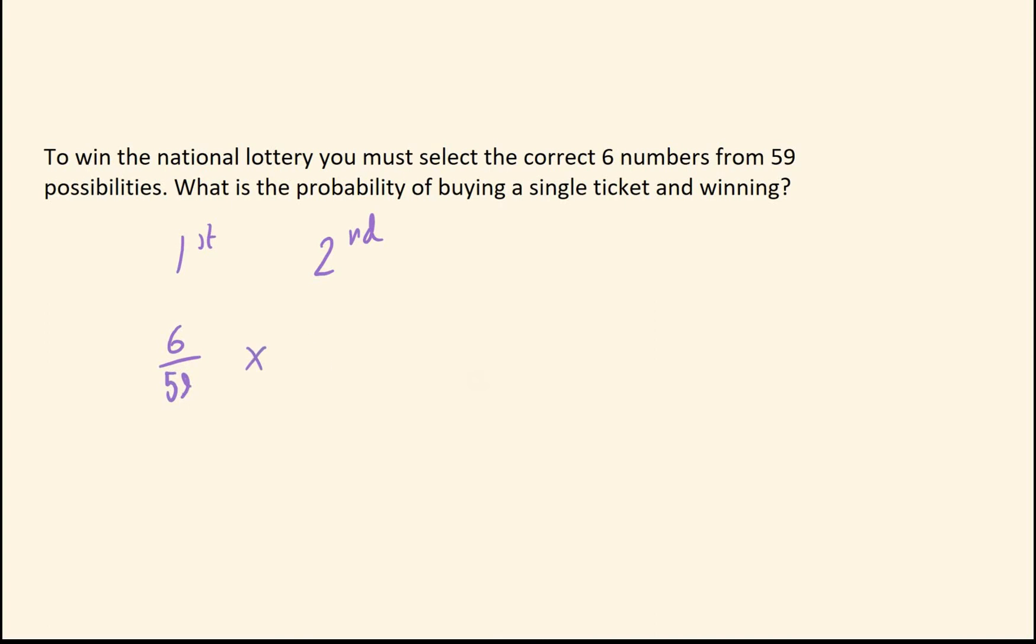Now for the second pick, one number has gone. I've already picked it, so I cannot pick it again. So rather than 59 choices left, there are actually only 58 choices left. So for my second pick, I would do times 5 over 58. Then for the third pick, it would be times 4 over 57, and you would keep going.